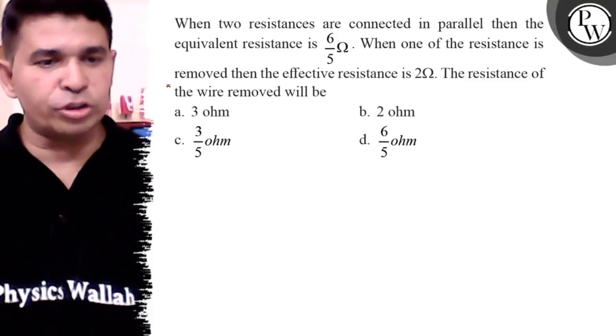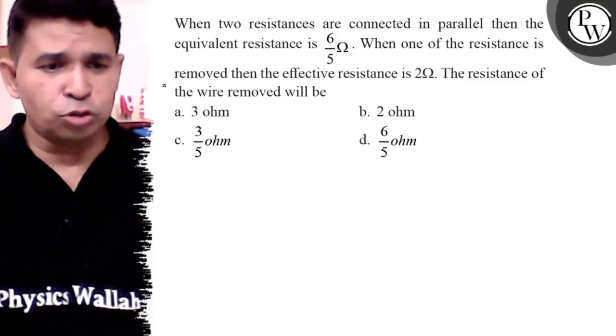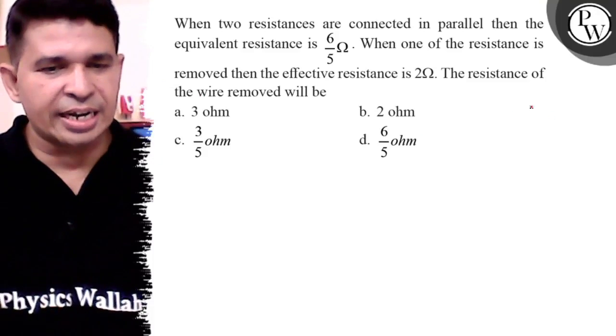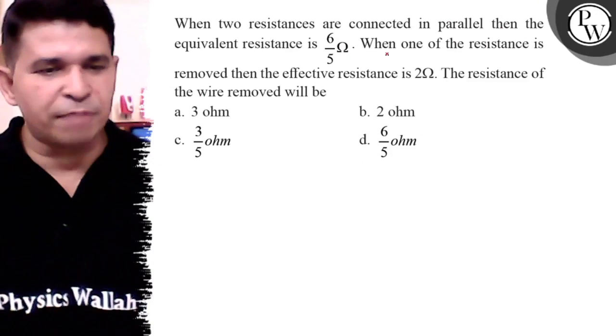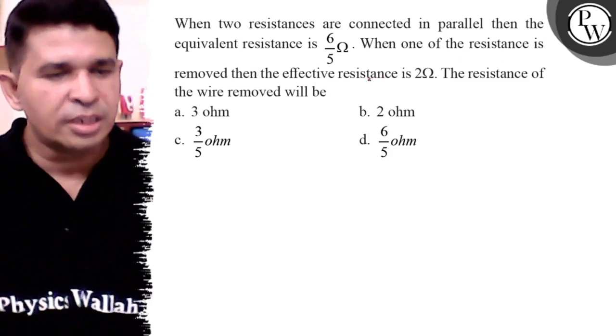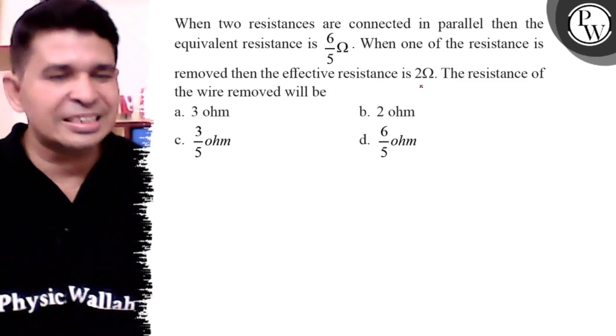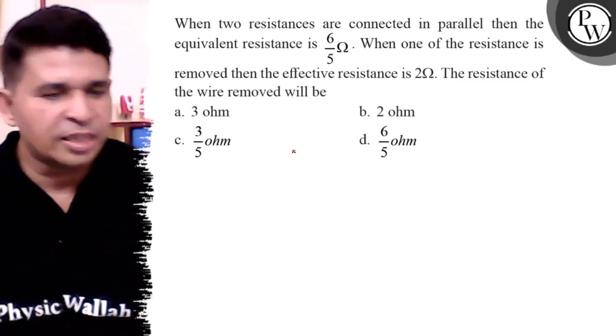Hello everyone, let's see this question. When two resistances are connected in parallel, the equivalent resistance is 6/5. When one of the resistances is removed, the effective resistance is 2 ohms, meaning the second resistance is 2 ohm.